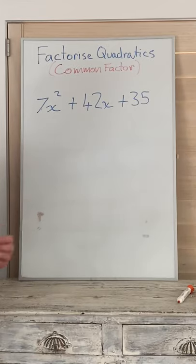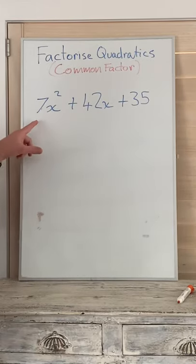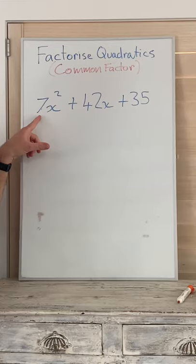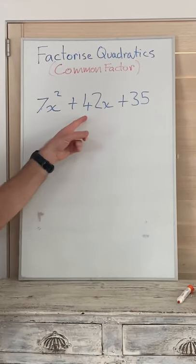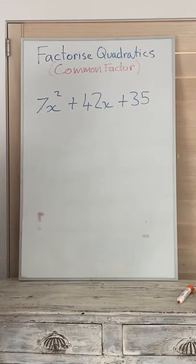Looking at this one you can tell straight away there is a number 7 there for the coefficient. We need to look at if there is a common factor or not, and looking at 7, 42 and 35 we know that 7 is a common factor of all.